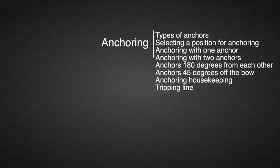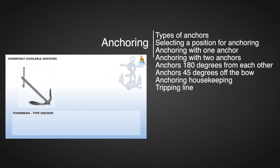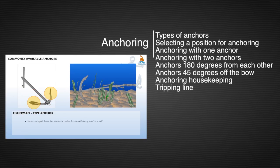Anchoring. The fisherman type anchor has diamond-shaped flukes that make the anchor function efficiently as a rock pick.